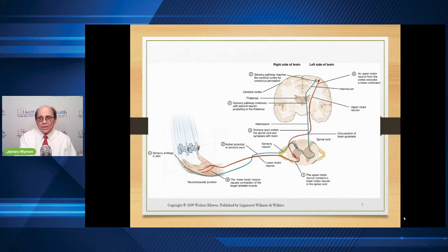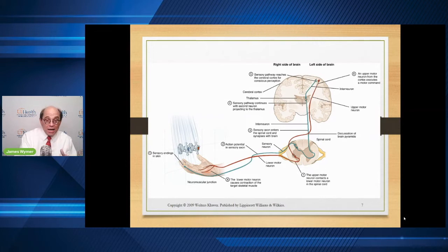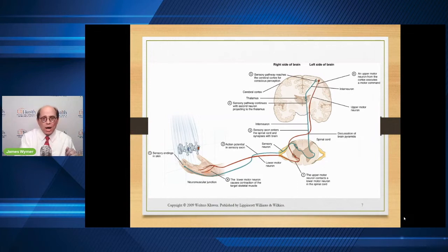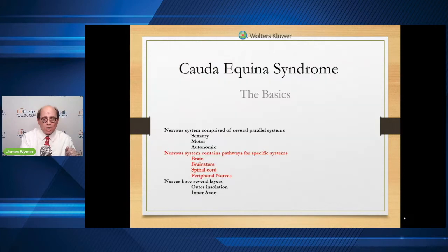This slide describes these systems: they extend from the brain at the top, down through the spinal cord, and work their way out to the skin where sensory changes can occur. Notice that the left side of the brain goes over to the right side of the body — there is some cross-wiring when people talk about this.